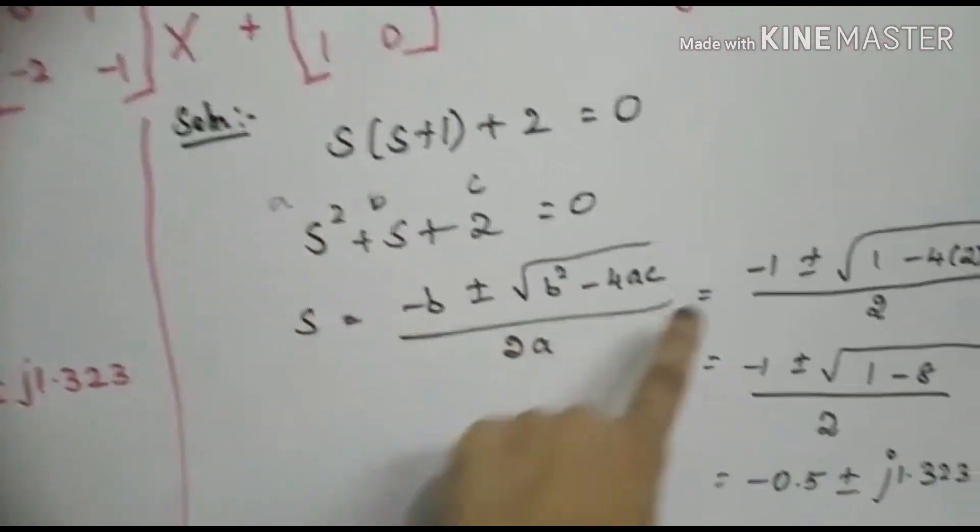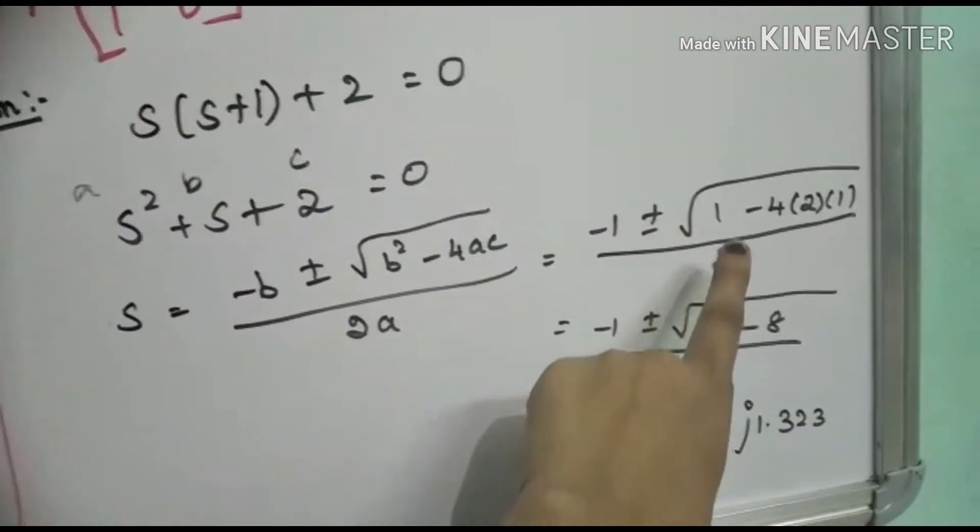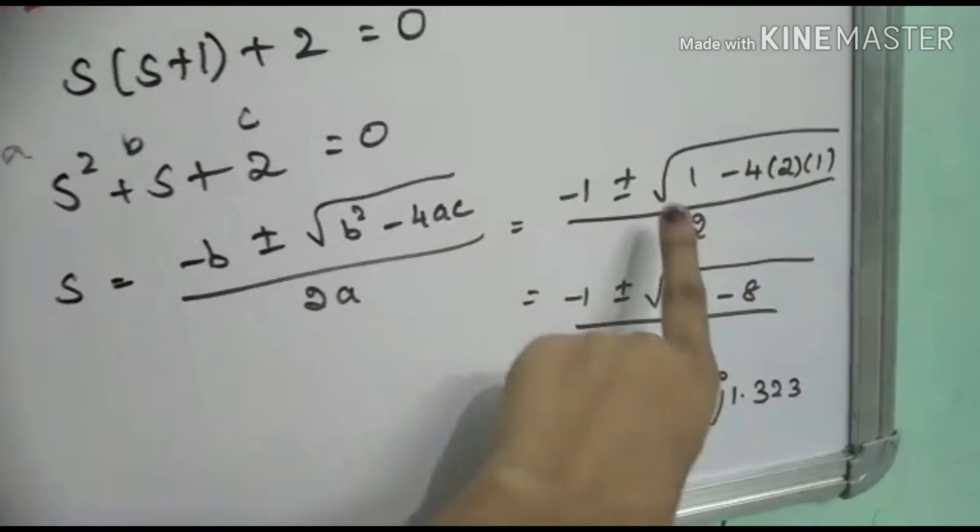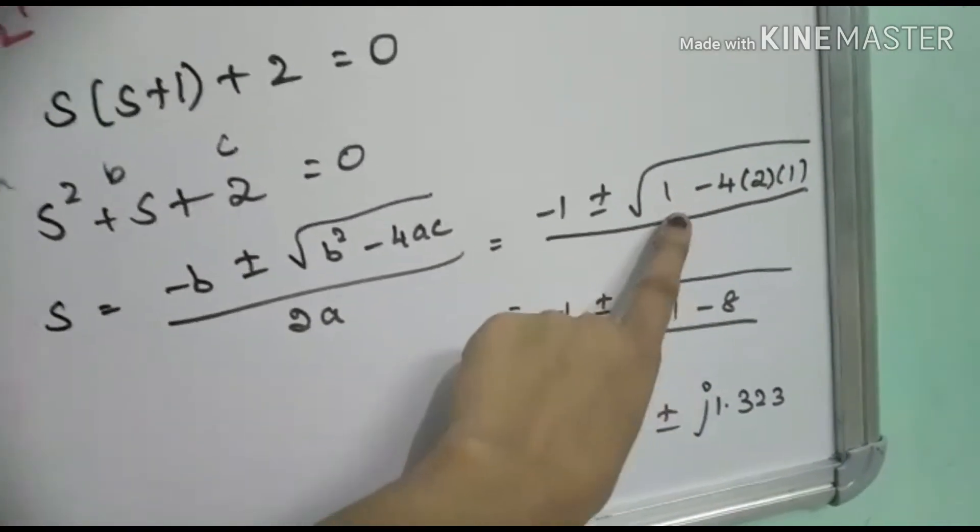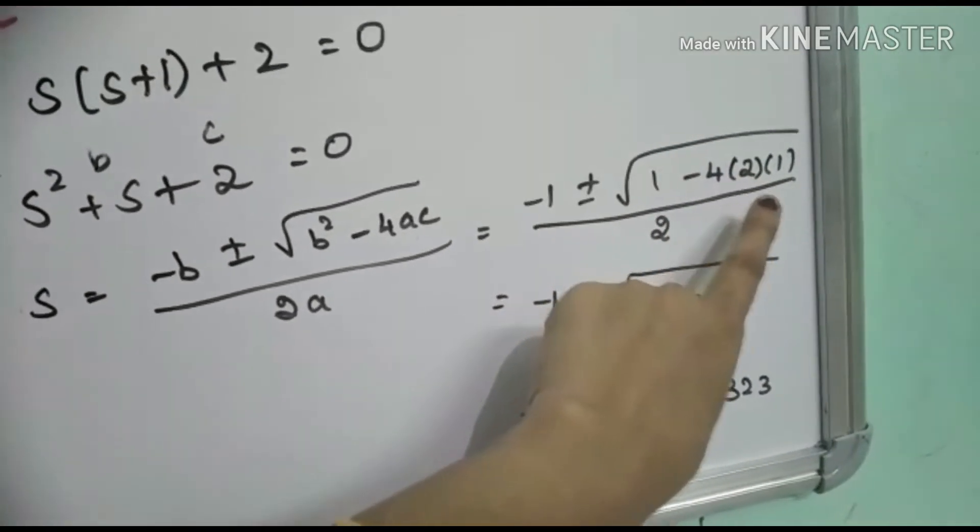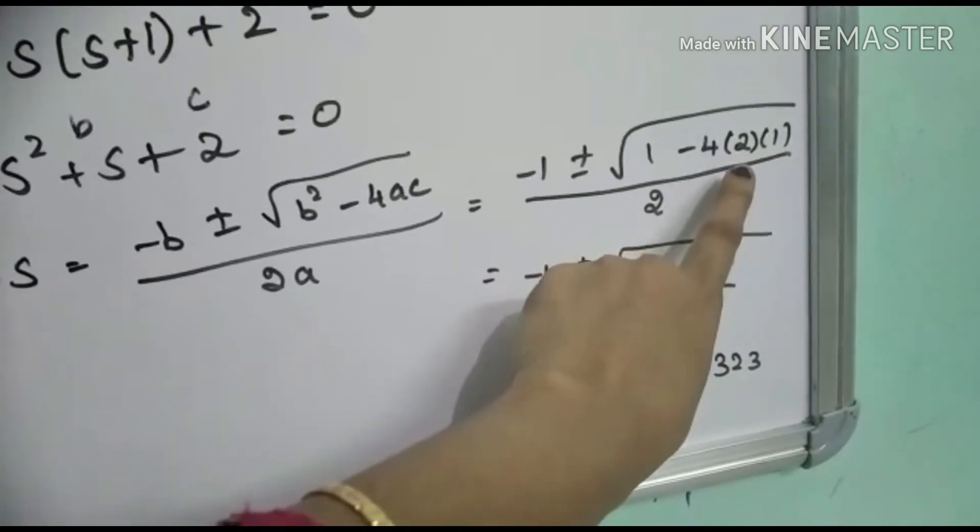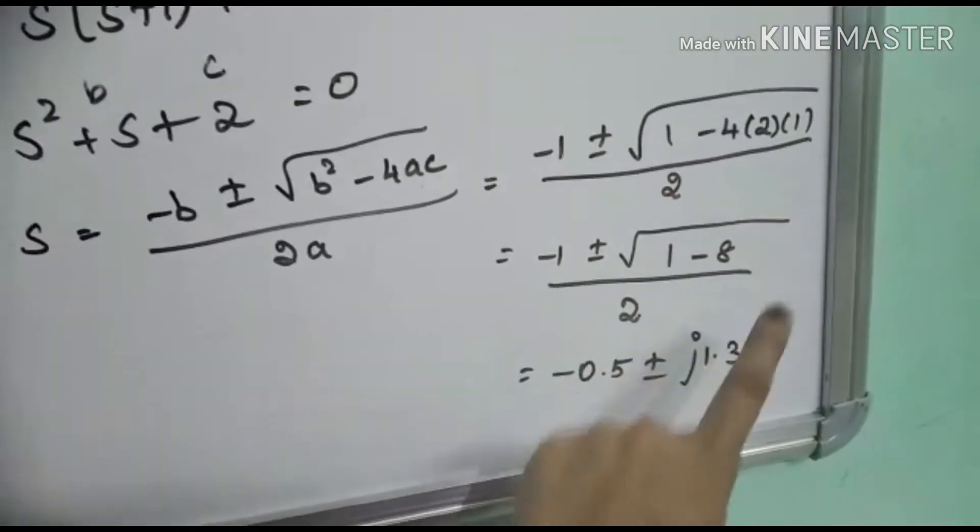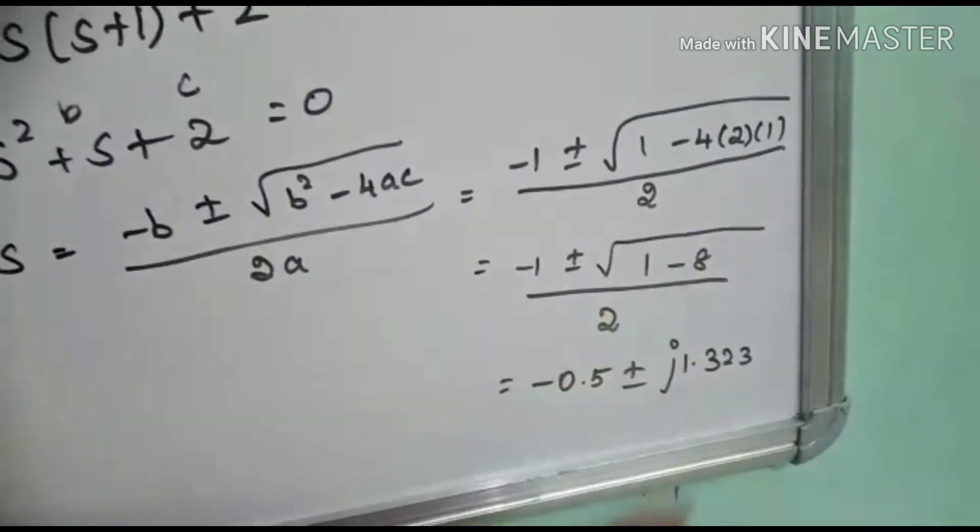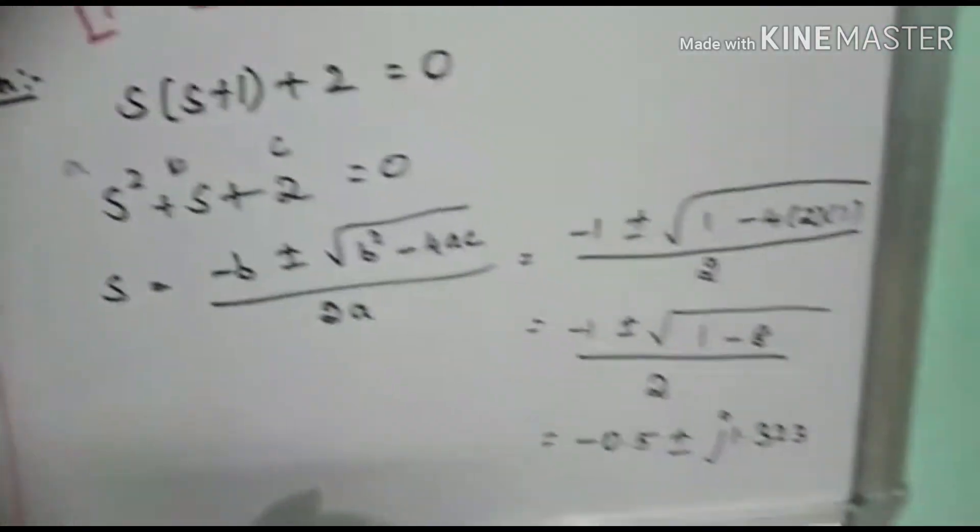B term is 1. So minus 1 plus or minus root of B squared, that is 1 squared minus 4 times A is 1 and C is 2, so minus 8 we are getting, divided by 2 times A, that is 2 times 1.